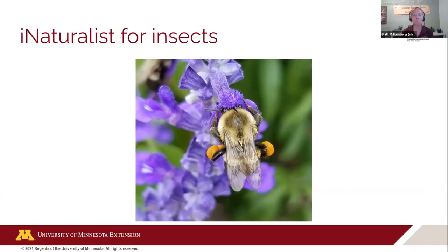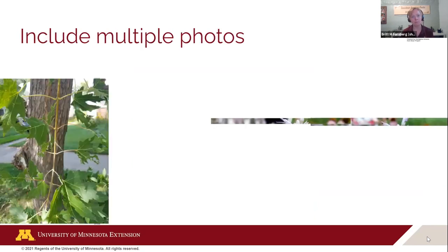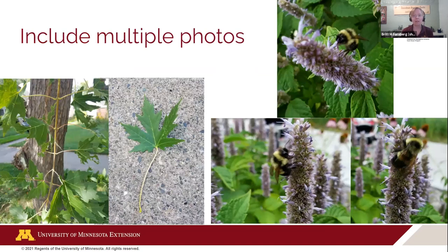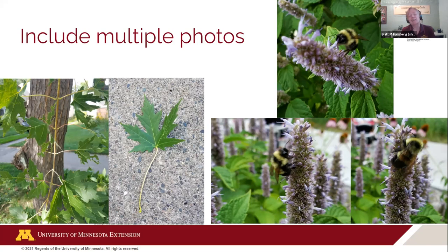Some tips specifically for insects: have multiple photos. These insects are pretty small and different characteristics are needed to identify them — often you can't see everything in one picture. For the rusty patch bumblebee, the face shape is important, seeing the rusty patch on the back is important, the side can be helpful, and the hind leg is a really simple way to determine if it's male or female. If you can get multiple pictures from different angles, your observers might be able to see the one thing they need to feel confident about their ID.